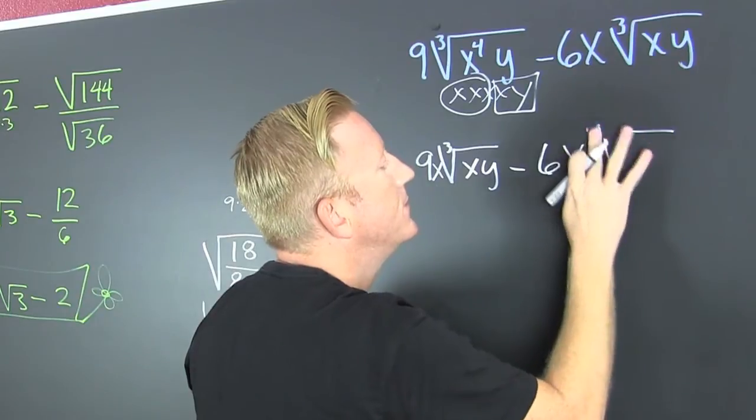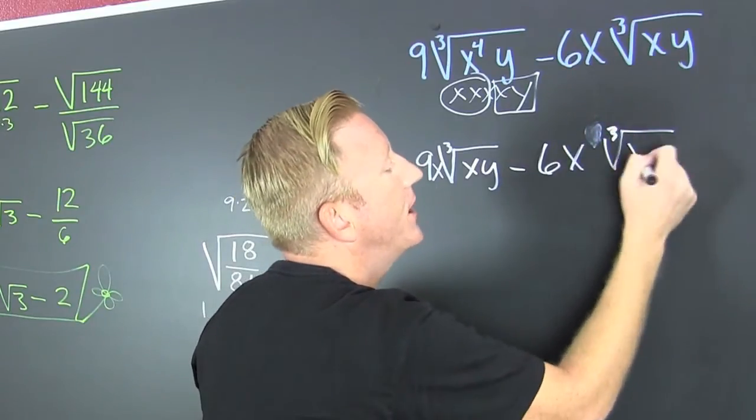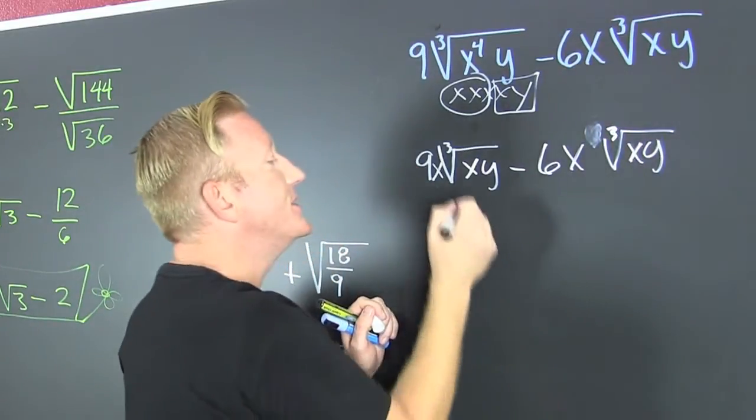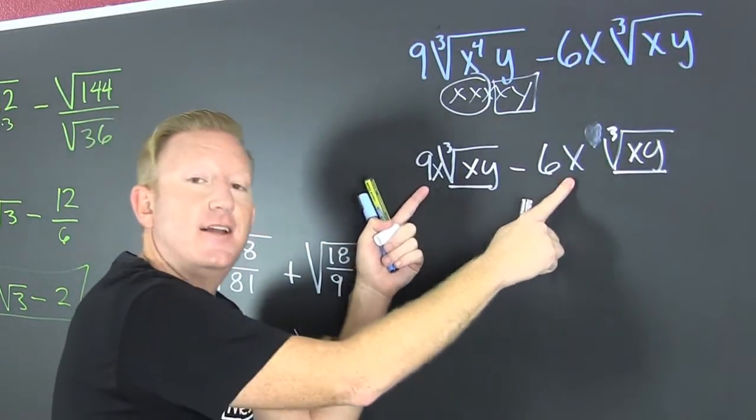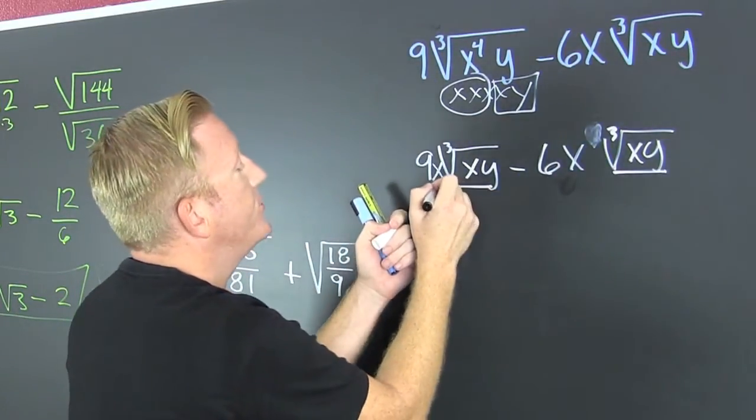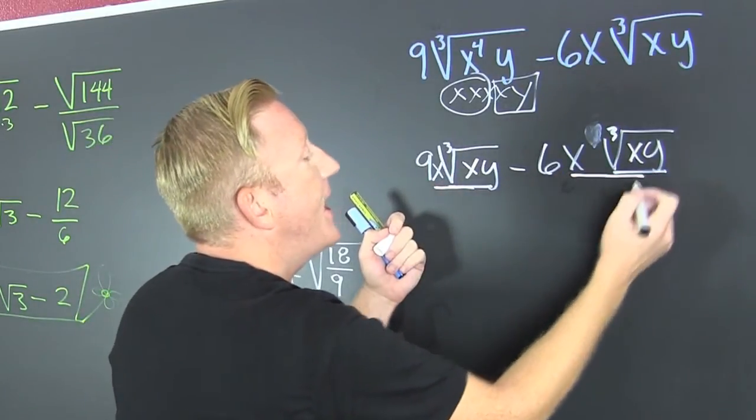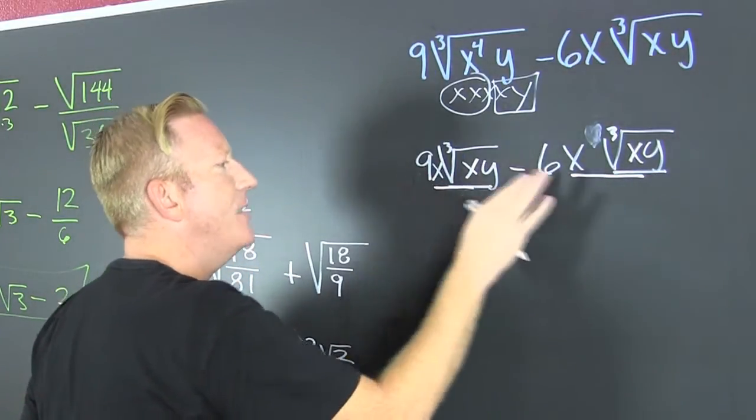Now since I have like radicals, I can add the numbers in front as long as they're alike too. All of this is alike, X√(3XY). So the 9 minus 6 is 3.